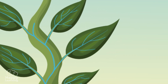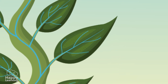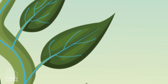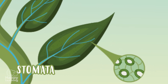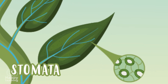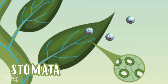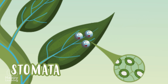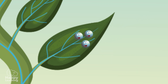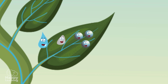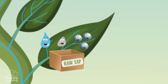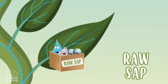The leaves are full of tiny pores called stomata, which absorb carbon dioxide that the surrounding air contains. All this — water, minerals, and carbon dioxide — is called raw sap.